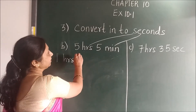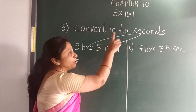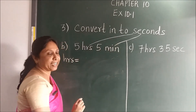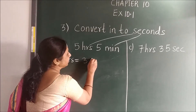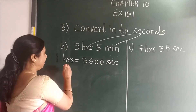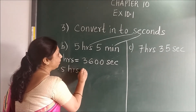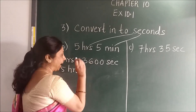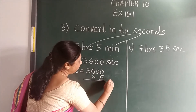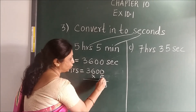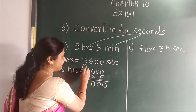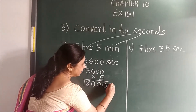Here, 5 hours and 5 minutes you have to convert into seconds. First you will find the relation of hours and seconds: 1 hour is equal to 3600 seconds. So 5 hours is equal to how many seconds? You will multiply 3600 by 5. 5 zeros are 0, 5 zeros are 0, 5 sixes are 30 — carry 3 — 5 threes are 15, plus 3 is 18. So you get 18,000 seconds.